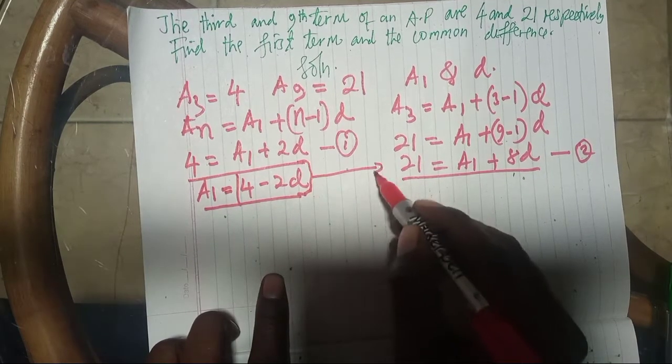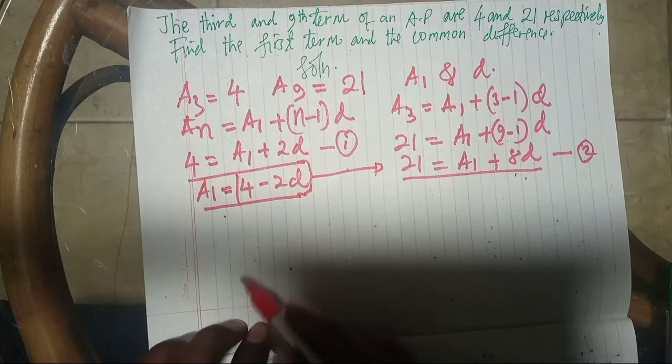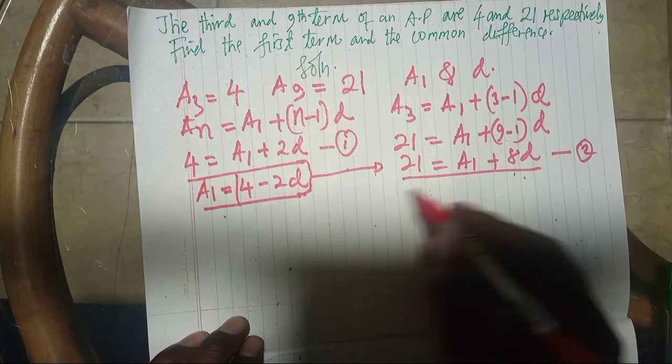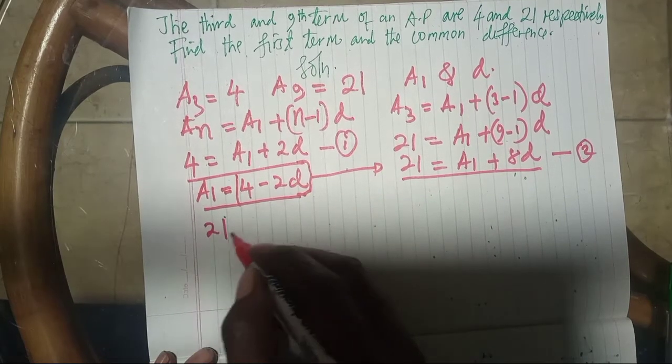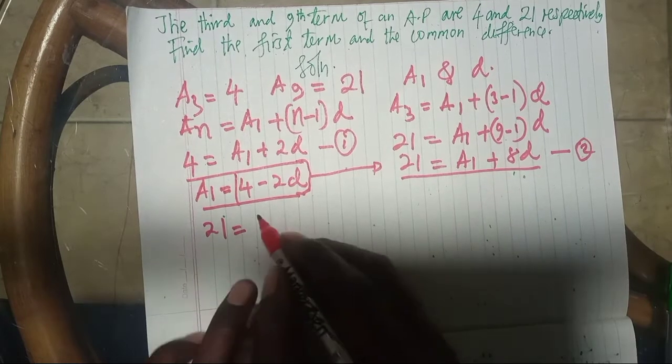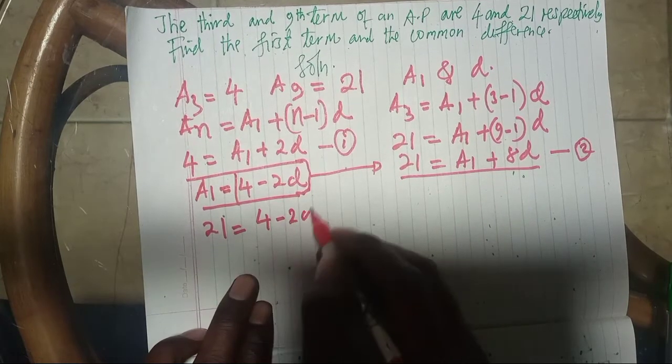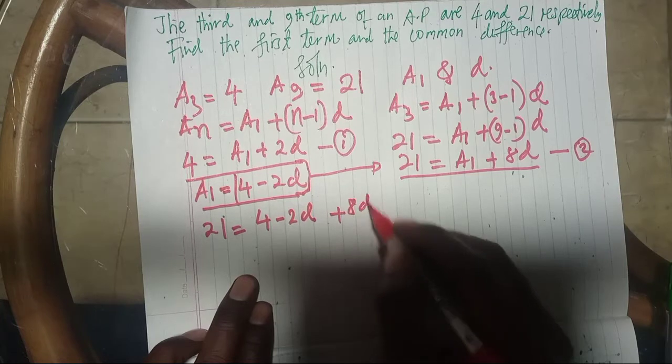Now we substitute here. We come and substitute, meaning that it will be 21 equals, A1 is 4 minus 2D, then plus 8D.